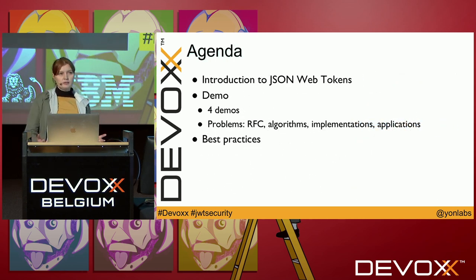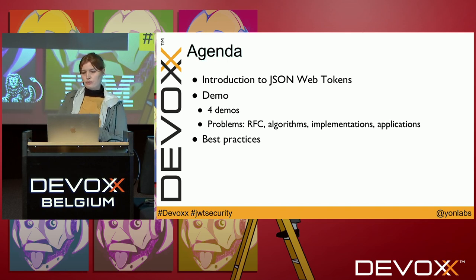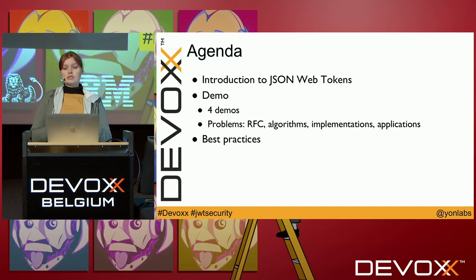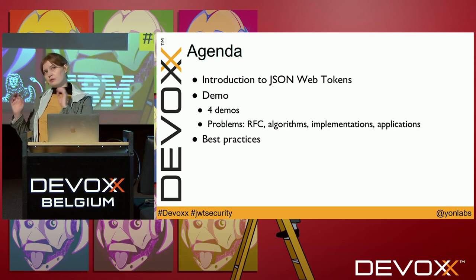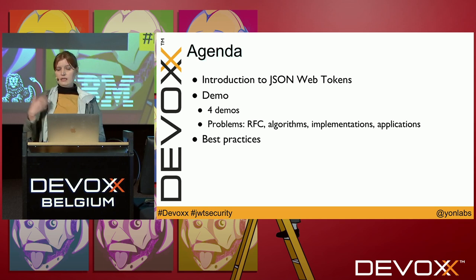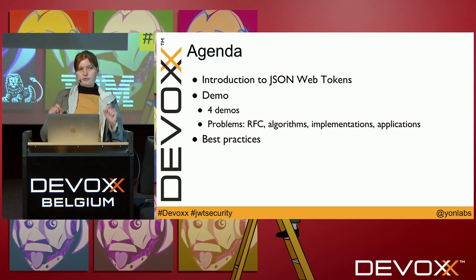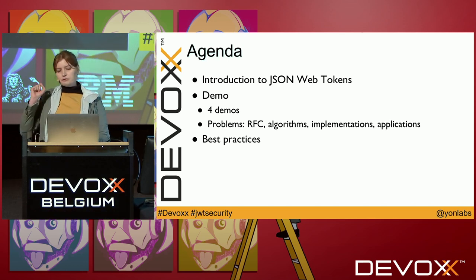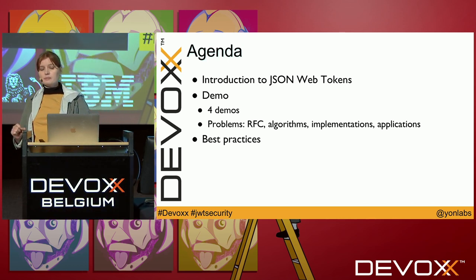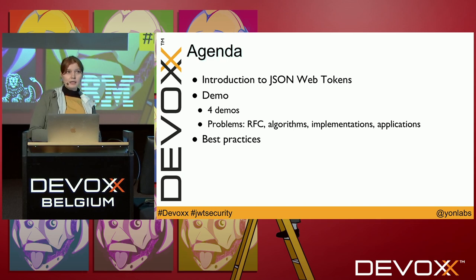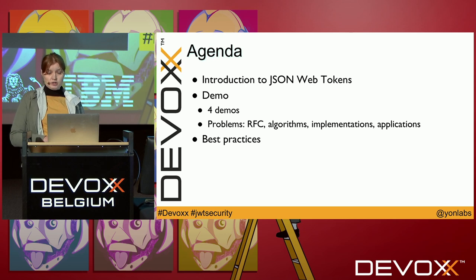What am I going to talk about today? First, a brief introduction to JSON Web Tokens, just for all of us to be on the same page when it comes to basic knowledge and terminology. The key part of the talk involves four demos that reveal some security problems with the spec, the implementation of token libraries, and some problems with our applications.